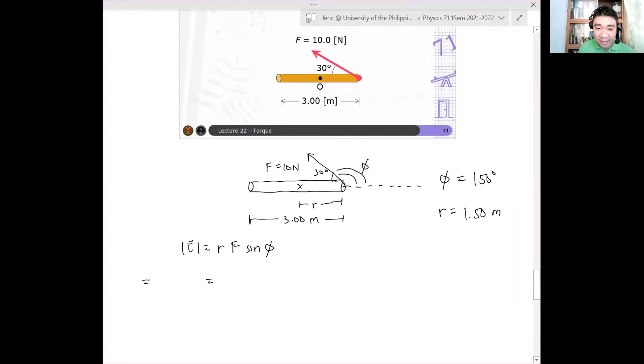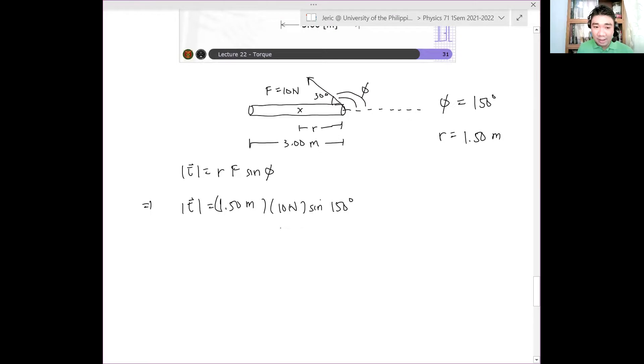Ang kailangan mo doon ay yung distance from the axis of rotation to the point where the force is applied. Okay? Yun yung length yung lever arm. Okay? So in that case, I have an R here. Solving for the magnitude of tau. So we have magnitude of tau is simply 1.5 meters multiplied by 10 newtons multiplied by the sine of 150 degrees. And hence, therefore, the magnitude of sine 150. So one half lang to. Thus, we see that the magnitude of the torque is simply 7.5 Newton meters. So that's our answer.